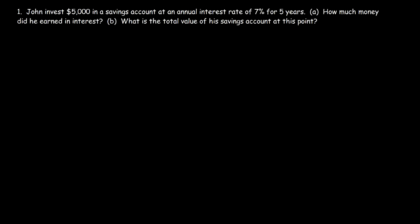John invests $5,000 in a savings account at an annual interest rate of 7% for 5 years. How much money did he earn in interest? So the equation that we're going to use is the simple interest formula, I is equal to P, R, T.